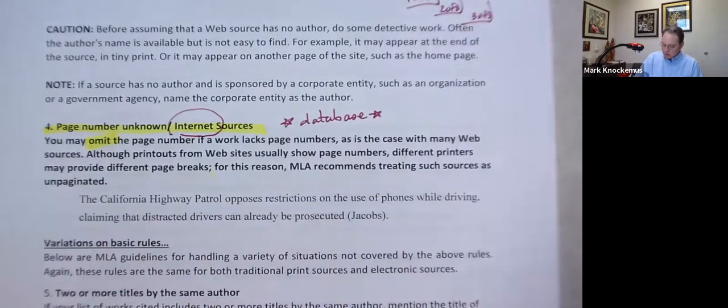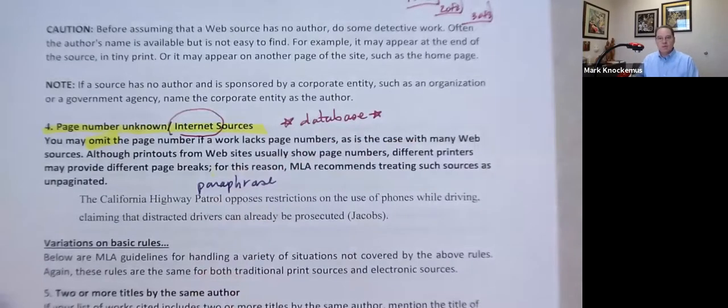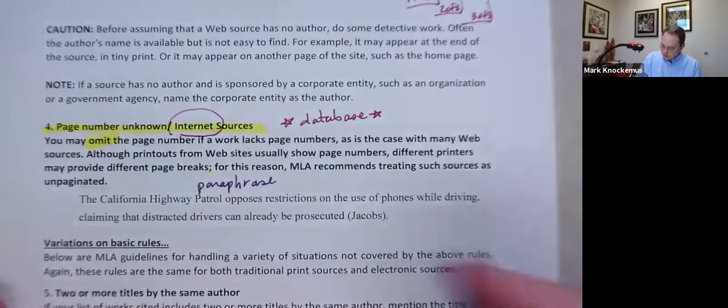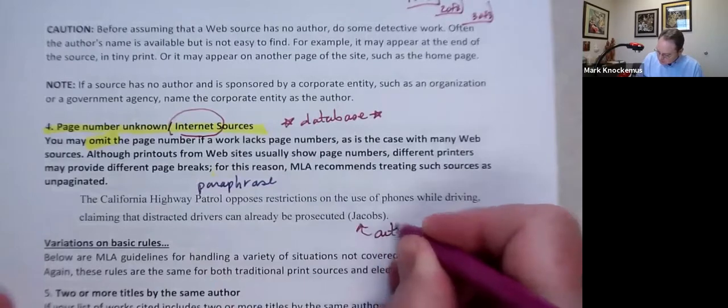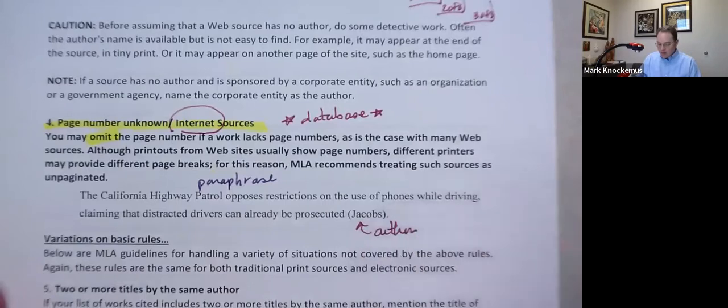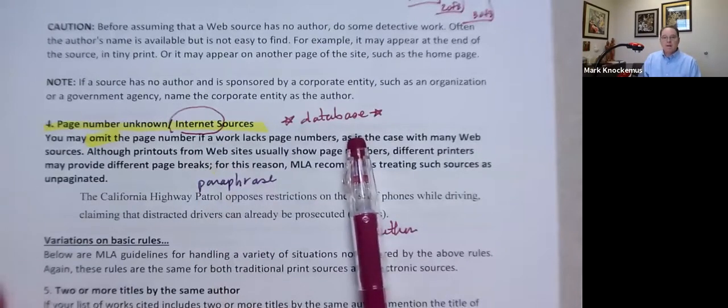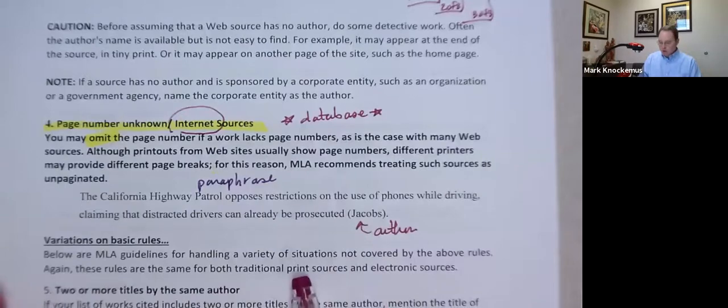So we look here. We don't see quotation marks. So this is a paraphrase. Remember, you have to cite paraphrases. The California Highway Patrol opposes restrictions on the use of cell phones while driving, claiming that distracted drivers can already be prosecuted. Jacobs. Who is Jacobs? The author. Why is there no page number? Because it either came from an EDU internet source, or it's an article from a database. So that's how we do it.